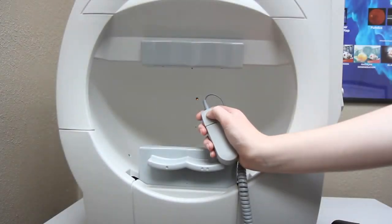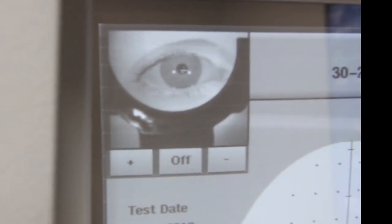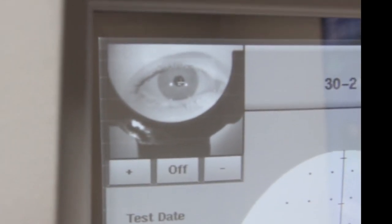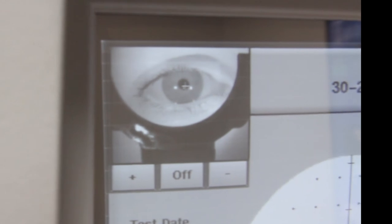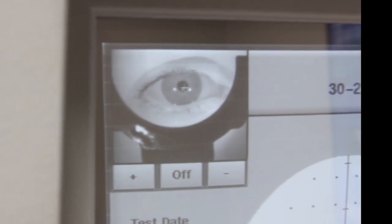Hold the button down to pause if you need to rest or if your vision starts going gray. Blink your eyes normally during the test. The best time to blink is right after the light flashes so you don't miss the light.